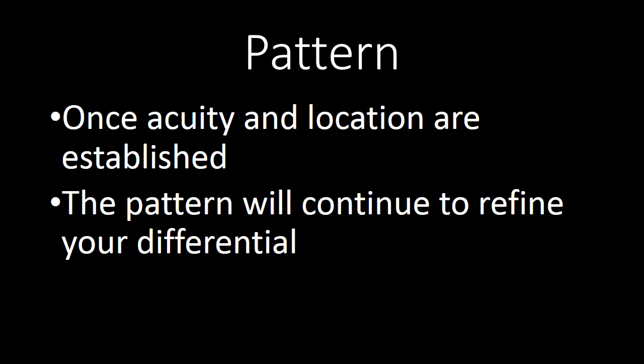We have a lot more to go on pattern, especially when we talk about interstitial lung processes. Once you've established your acuity and location, start to think about the pattern of the process within the lung. Say: this is a diffuse process, it's patchy, on CT it looks like ground glass opacity — and that is going to start to help you narrow your differential diagnosis, especially when placed in the context of the clinical history you have on your patient.